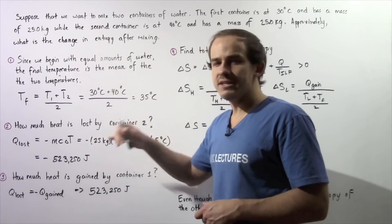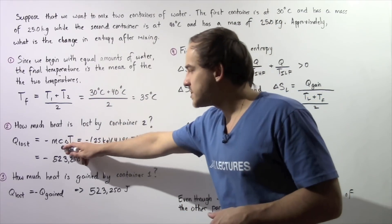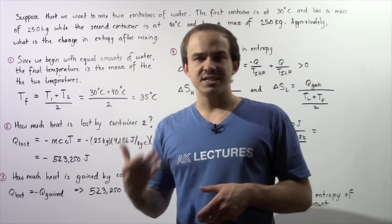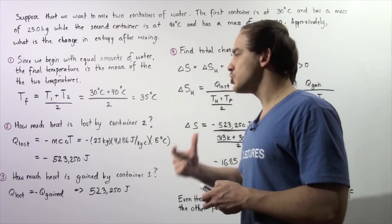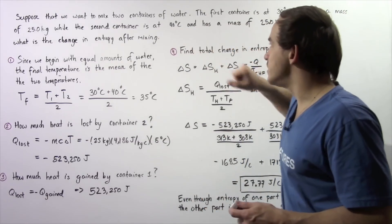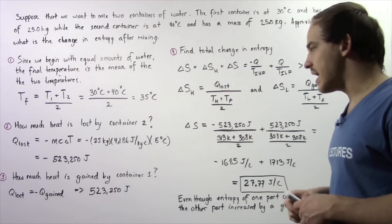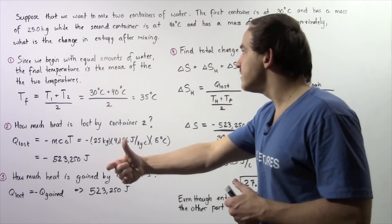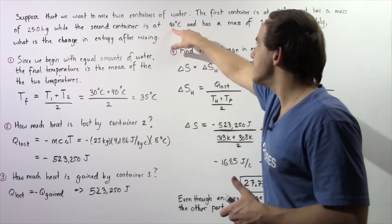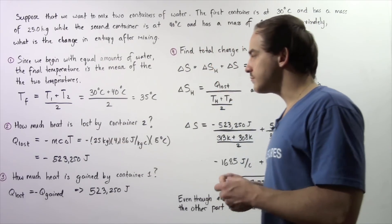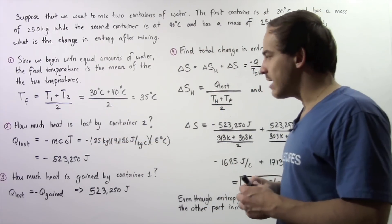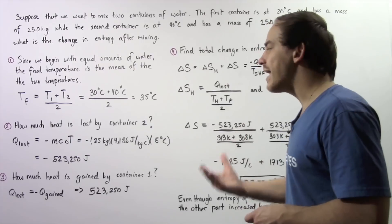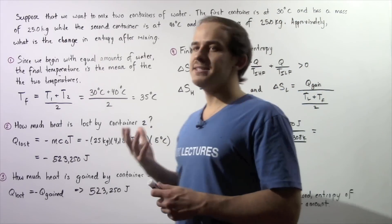So we have negative 25 kilograms multiplied by the specific heat of water, 4,186 joules per kilogram per Celsius, multiplied by the change in temperature: 40 degrees Celsius minus 35 degrees Celsius. The negative sign comes from the fact that final minus initial is 35 minus 40, giving us negative five. Multiplying these quantities out, we get 523,250 joules of energy lost by the water in container number two.